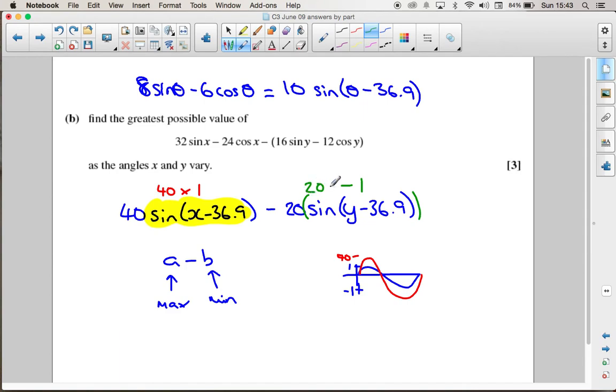So if we work all that out, we're going to get 40 take away -20. So the maximum value of this expression here is 60: 40 minus minus 20.